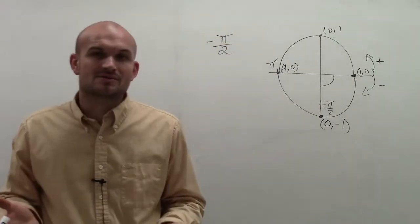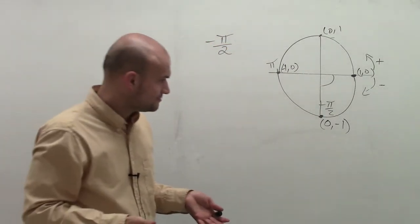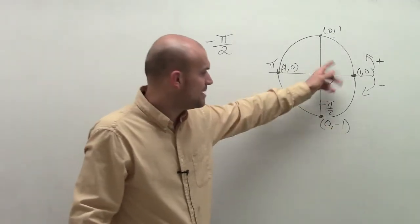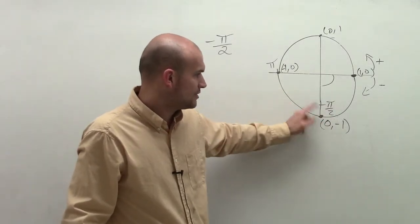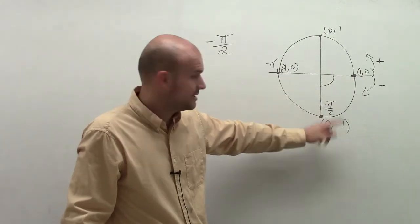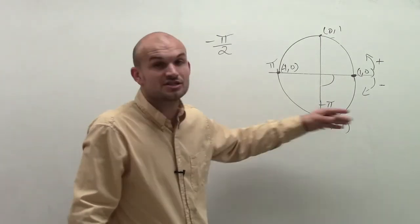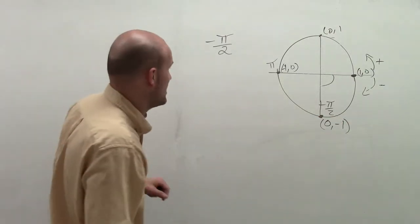So now, to evaluate for sine and cosine, all I simply need to do is just plug in the coordinate points for each one. Because remember, the sine of your angle on the unit circle represents the y-coordinate. The cosine is going to correspond to your x-coordinate. And the tangent is going to be the ratio of y over x.